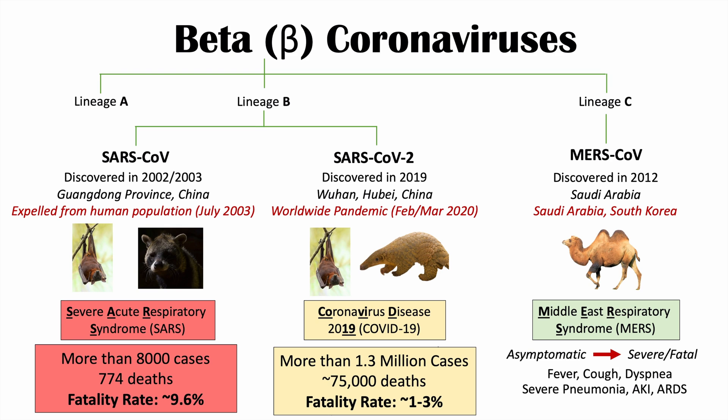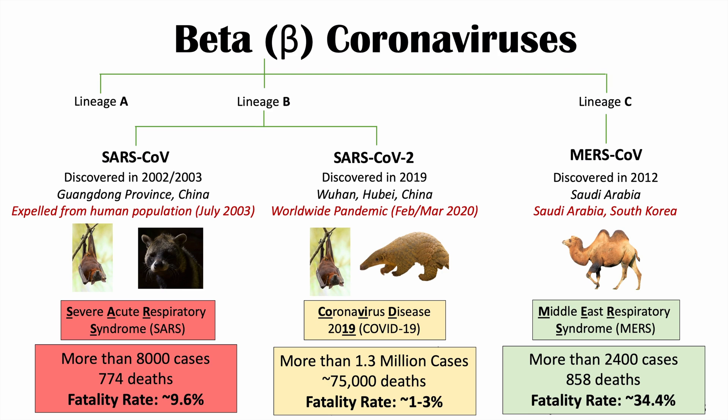Acute kidney injury seems to be more common with MERS-CoV than with SARS-CoV-2. Fortunately, the basic reproduction number of MERS-CoV is very low — quoted at 0.3 to 0.8 — meaning the virus essentially dies out because one individual infects less than one person ahead of them. As of this recording, MERS has more than 2,400 confirmed cases and 858 confirmed deaths, giving a fatality rate of approximately 34.4% — a very high fatality rate.